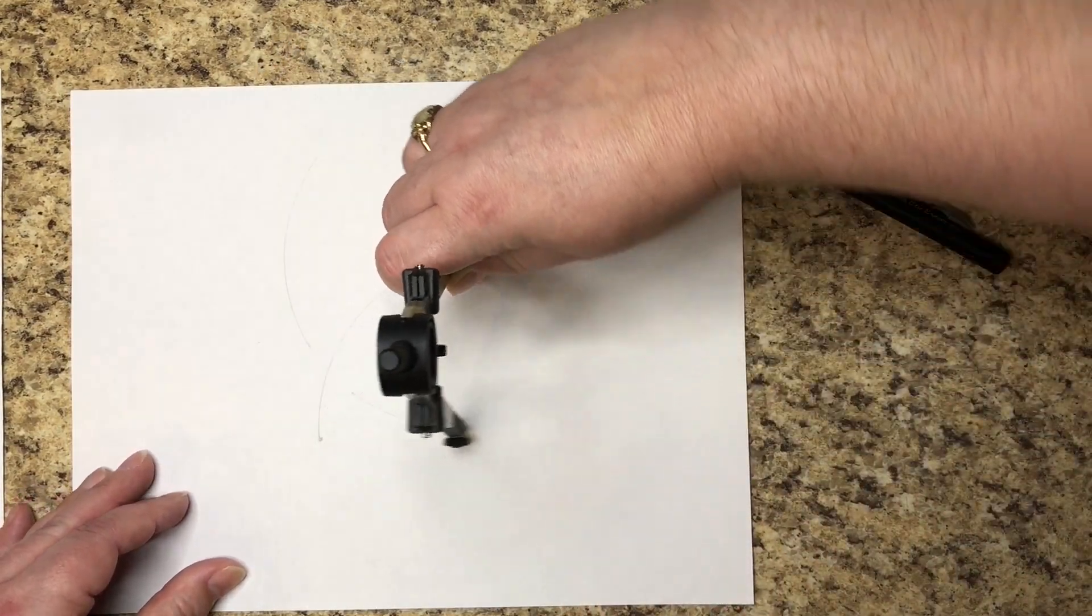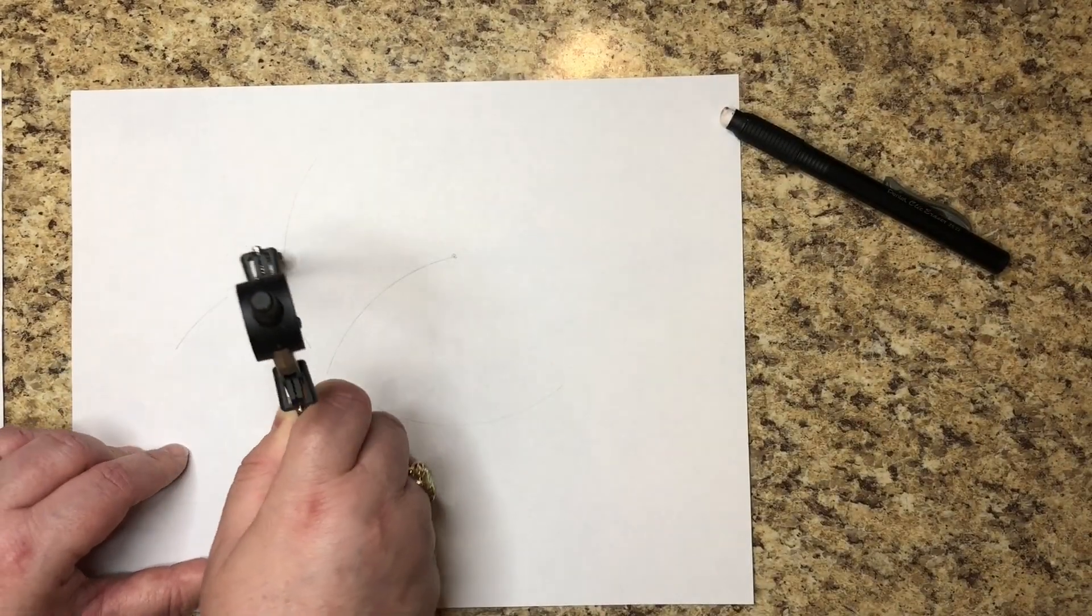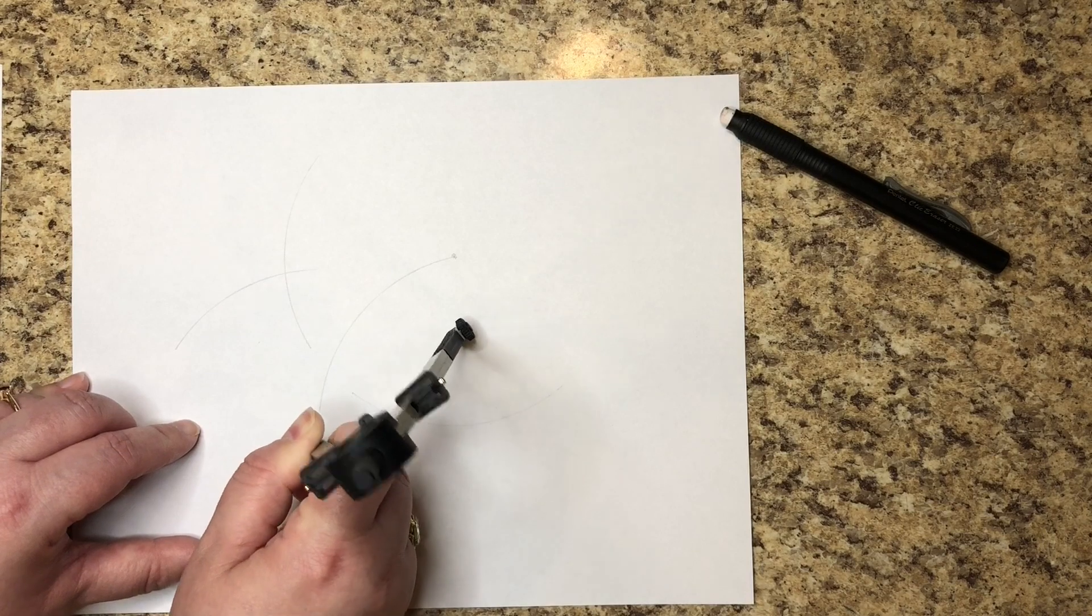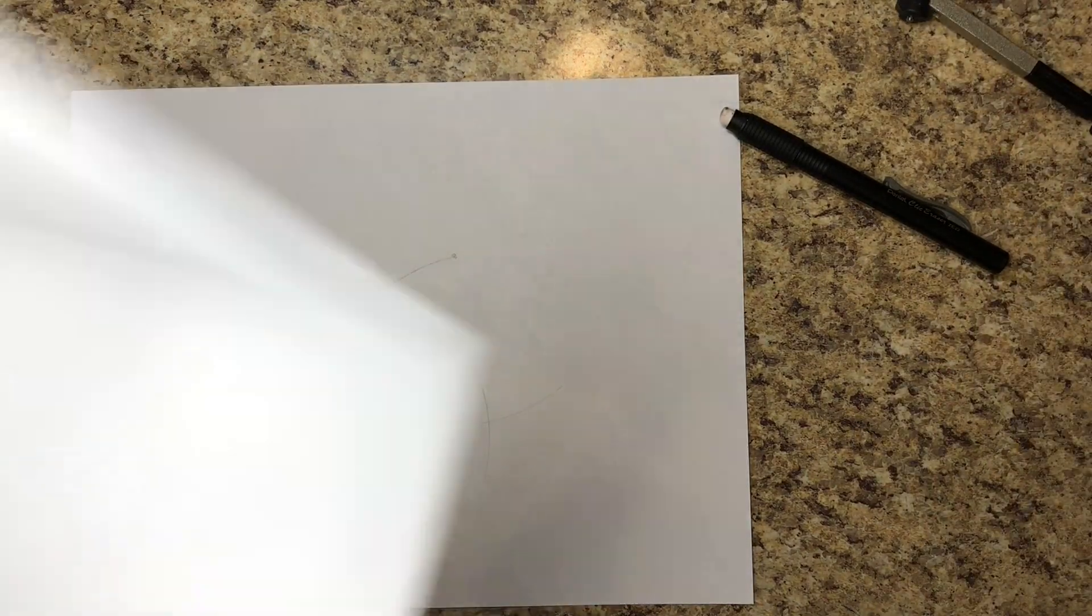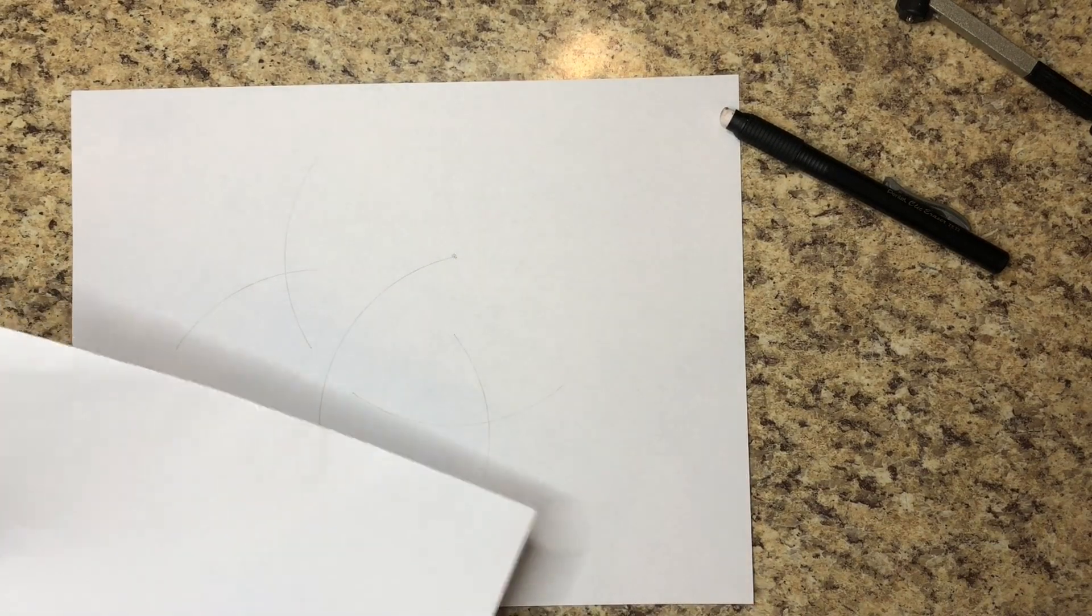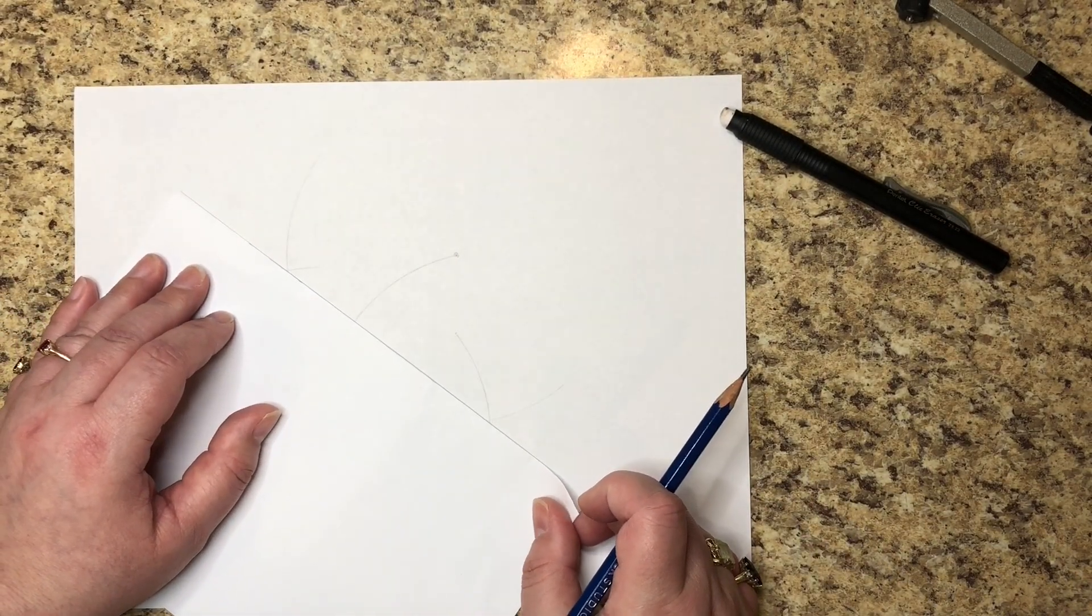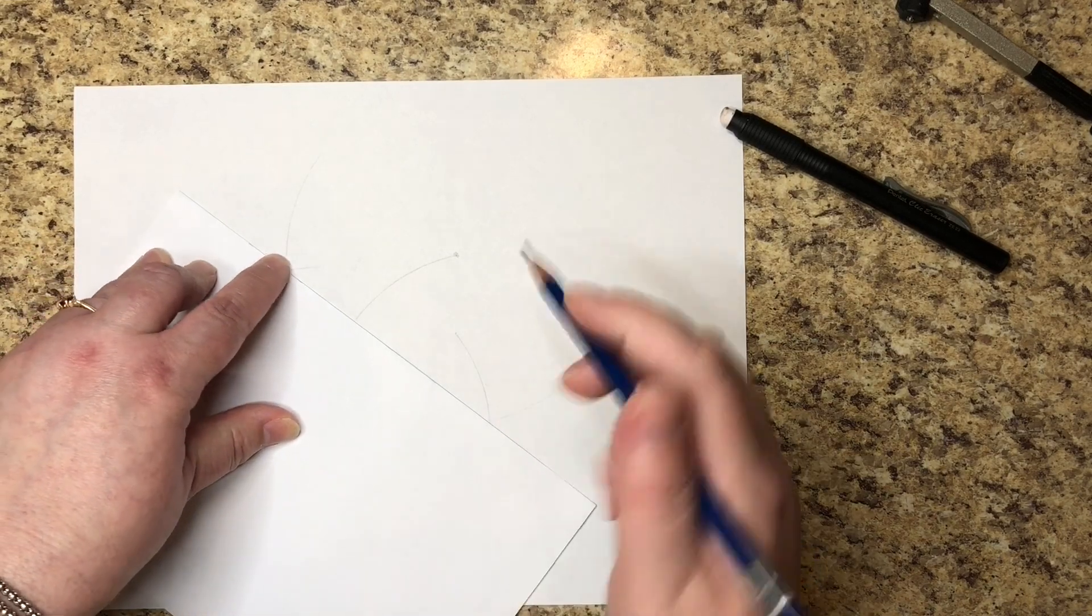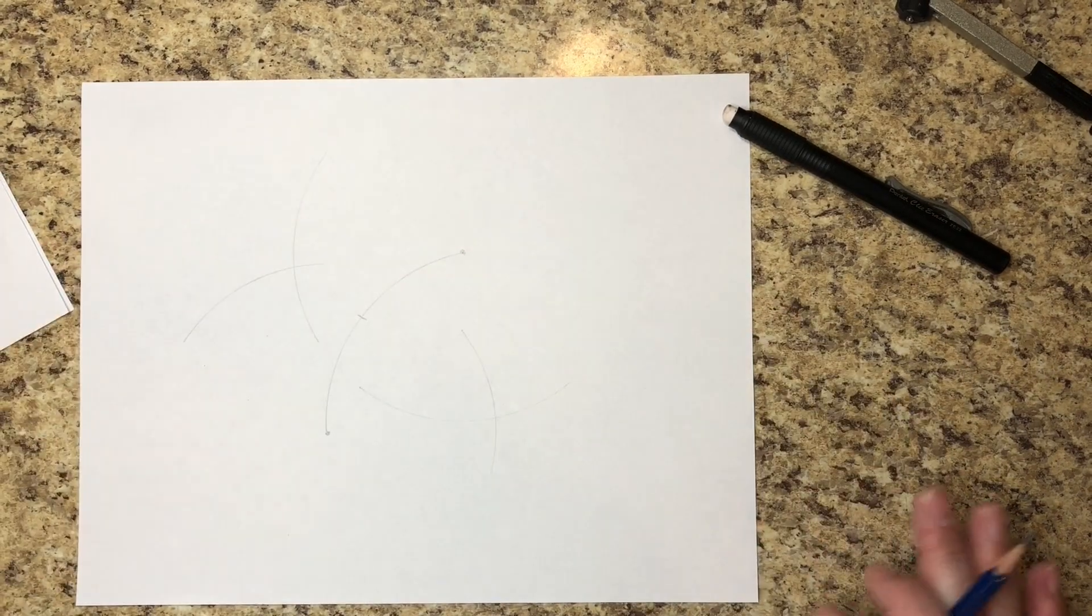Mark above, mark below. Put your point on the other end, mark above, mark below. Take any old straight edge, anything straight will do. Line up these two intersections.